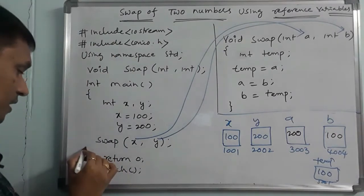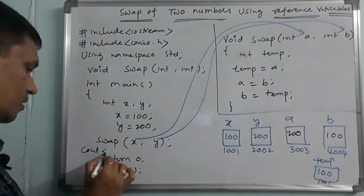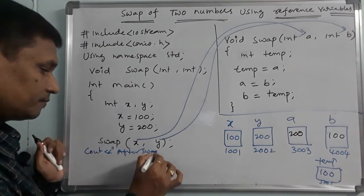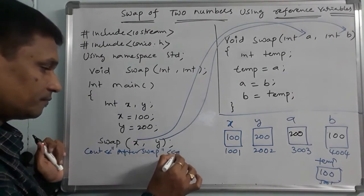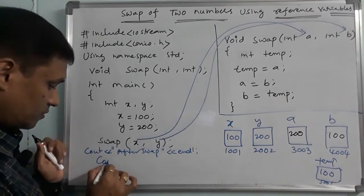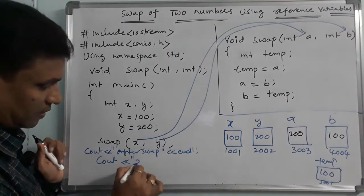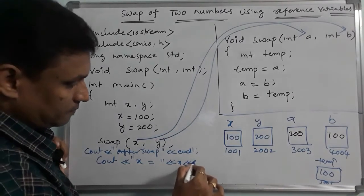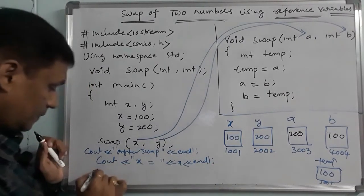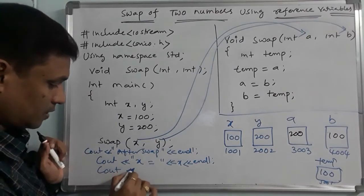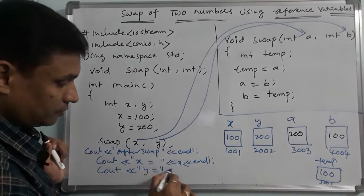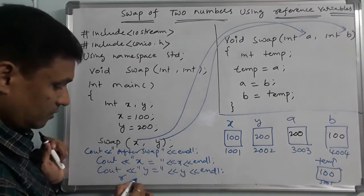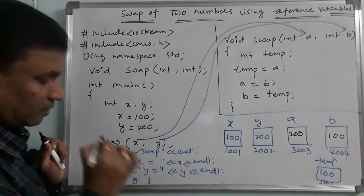So we can draw the display. For example: cout 'after swap', then endl, cout 'x equals' x, endl, cout 'y equals' y, endl. Return 0, getch. Finally close. So function returns back. After swap we have a message.